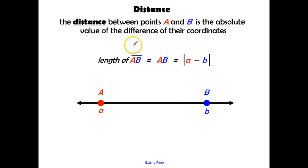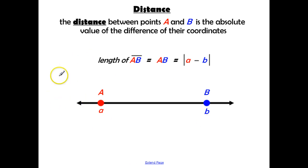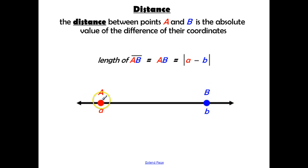The distance between points A and B is the absolute value of the difference of their coordinates. Take a look at this diagram. The capital letters A and B denote the two points and the segment AB.